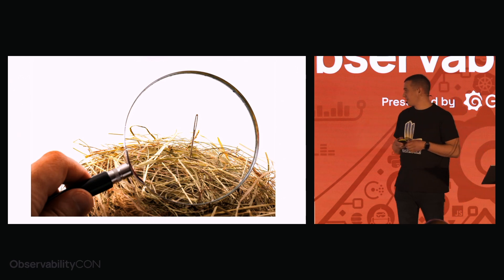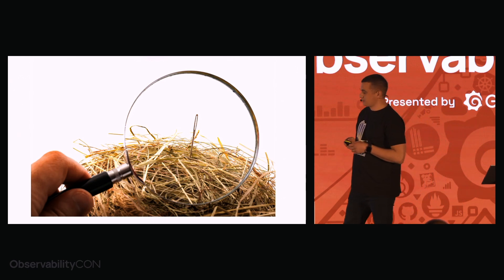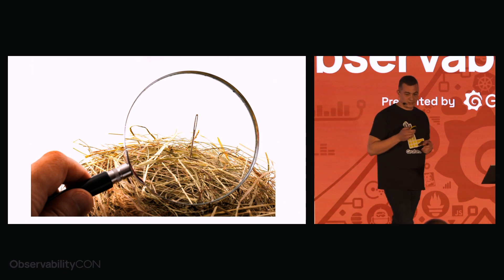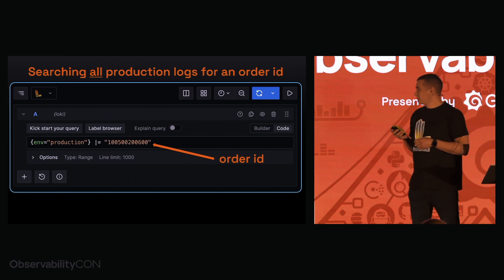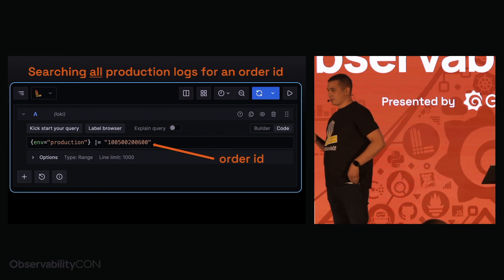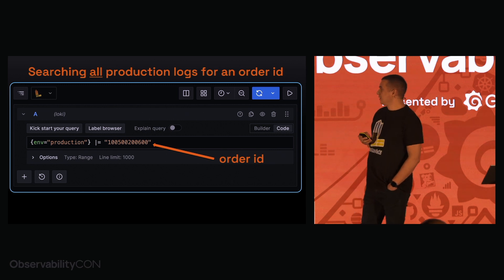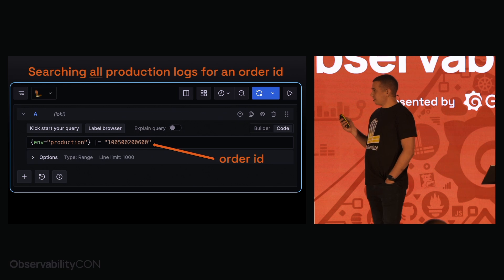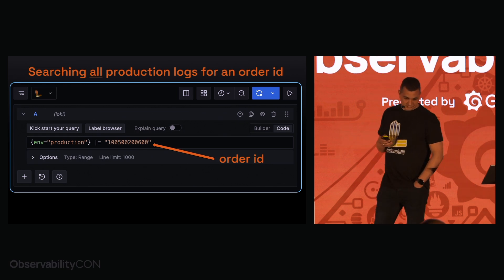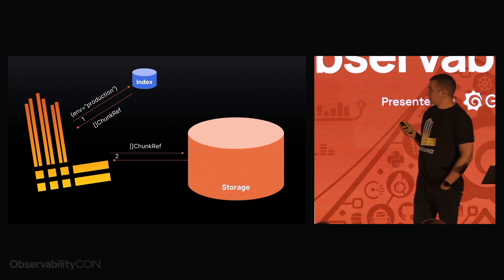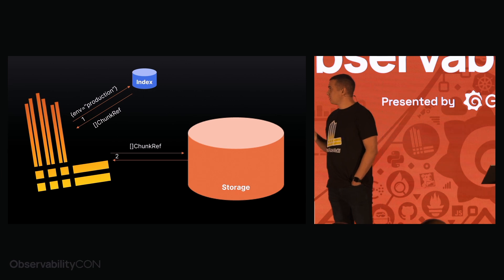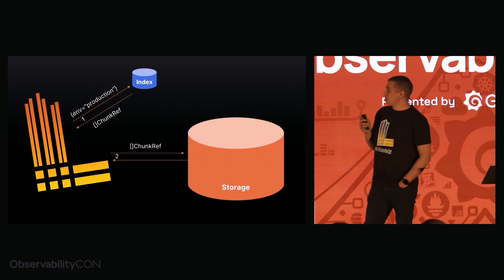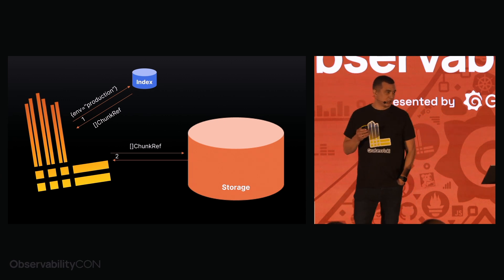We see a lot of non-optimal queries, but also we see that sometimes our clients need to find the needle in a haystack. For example, imagine a client wanting to investigate a failed order without prior knowledge of where the relevant logs might be. They are forced to search the entire production environment. What Loki does at this moment is go to the index and find all the chunks for the requested matcher — and it will be a huge count of chunks, because Loki doesn't index chunk content.